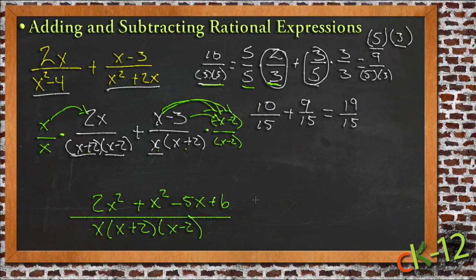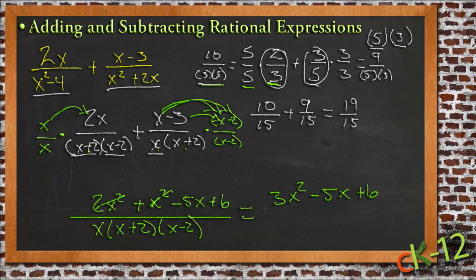So I have 2x squared plus 1x squared, that gives me 3x squared, minus 5x plus 6, and that's over our common denominator, x(x+2)(x-2).